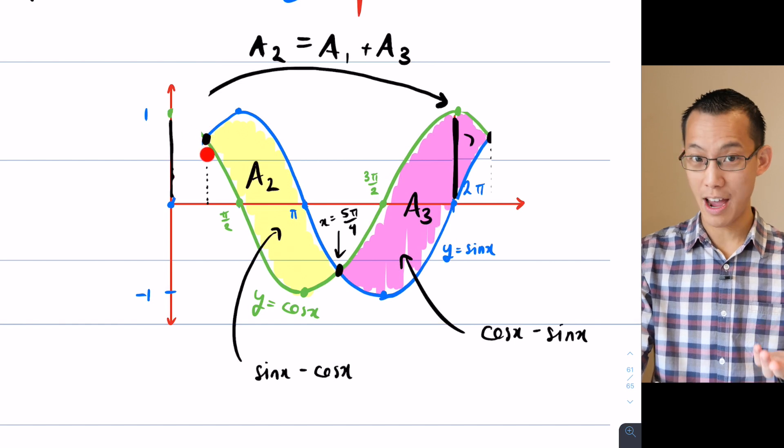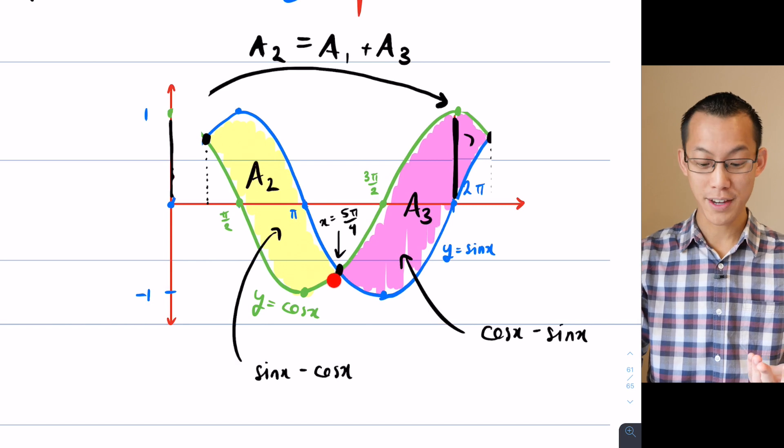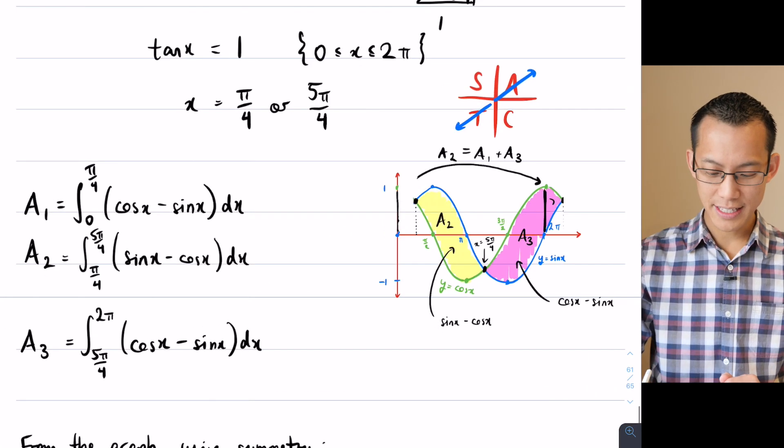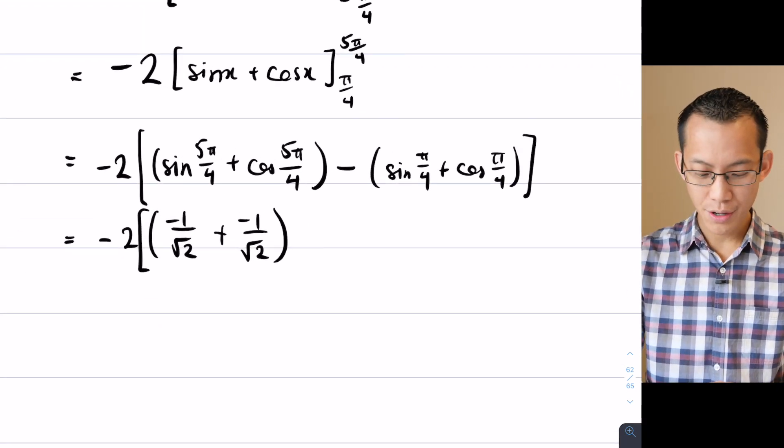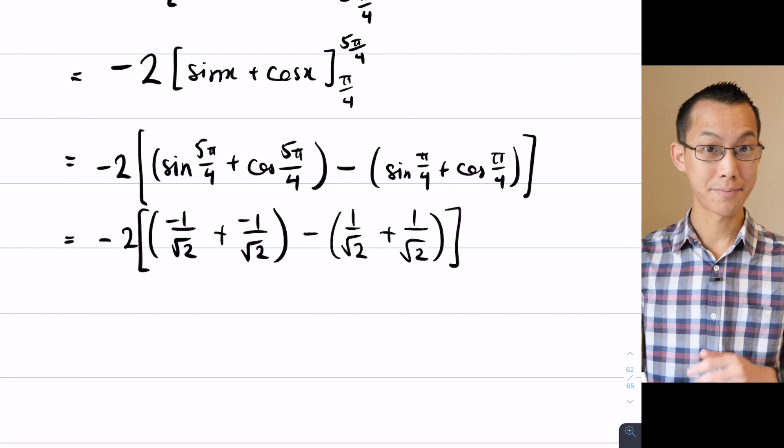Their function values are the same. So if I've worked out sine of 5 pi on 4, which is down here, then cos of 5 pi on 4 is going to be the same value. The blue and the green graphs overlap. And the same trick is true, the same thing is true, when I'm working out sine of pi on 4. So this is going to be positive 1 on root 2 and cos is also going to be positive 1 on root 2.